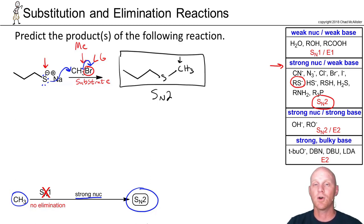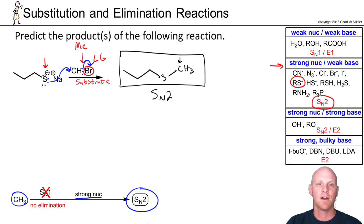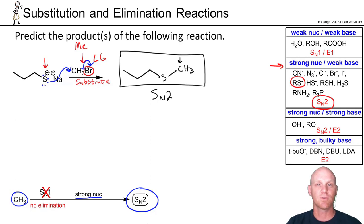One important note: don't just memorize these classifications — understand them. The best way to memorize them is to completely understand what makes a reaction SN2, E2, SN1, or E1. If you understand it, memorizing becomes easier, and you'll be able to handle exceptions and deeper understanding questions. Understand it in the process of memorizing it — it'll serve you really well in the long run.